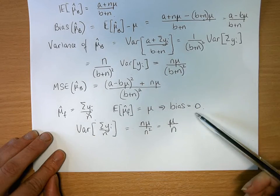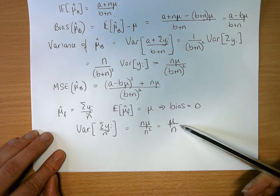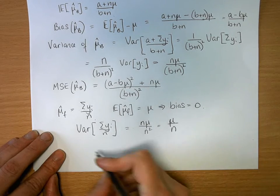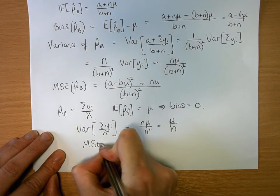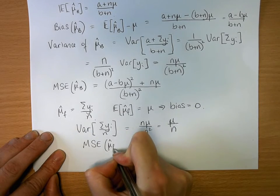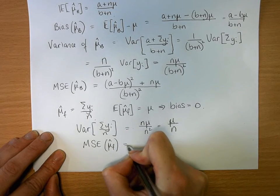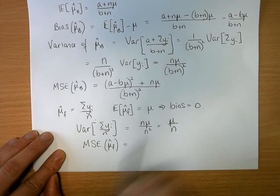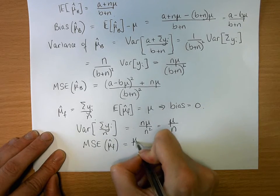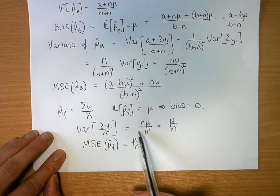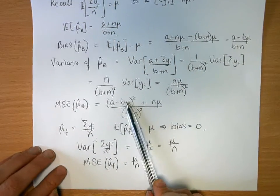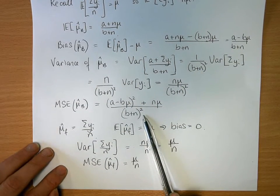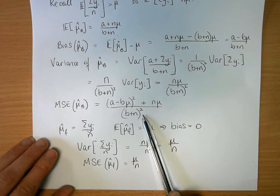So that's how you can then compare the mean square error of the estimators of mu hat f for using a frequentist approach, which is just the same as the variance here because the bias is zero. And when you're using a conjugate prior and you have a resulting posterior in closed form.